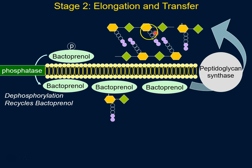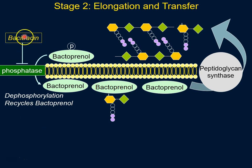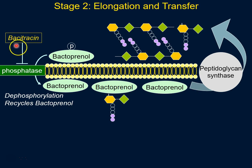Now we need to talk about inhibitors of stage two. The first is bacitracin, and bacitracin is a potent inhibitor of this phosphatase. In the presence of bacitracin, the bacteria cannot recycle bactoprenol, and therefore it will inhibit stage two of cell wall synthesis.